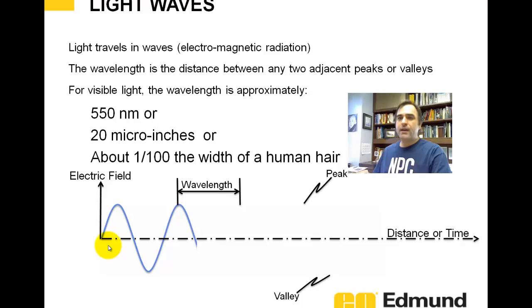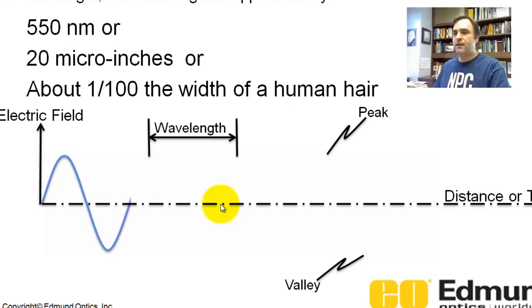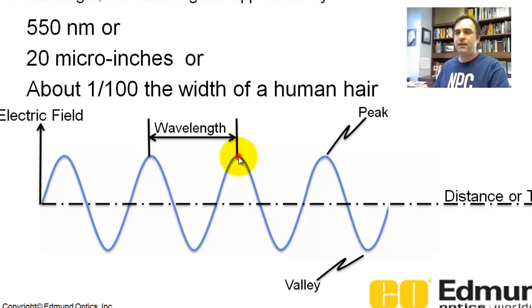So what is a light wave? Here I'm plotting the electric field as it travels and propagates along a distance or versus time. So you've got peaks, you've got valleys. From one peak to the next peak, that's called the wavelength. Again, from a valley to a valley, that's also the wavelength. Just by way of comparison, visible light's around 500 nanometers or a hundredth the width of a human hair.